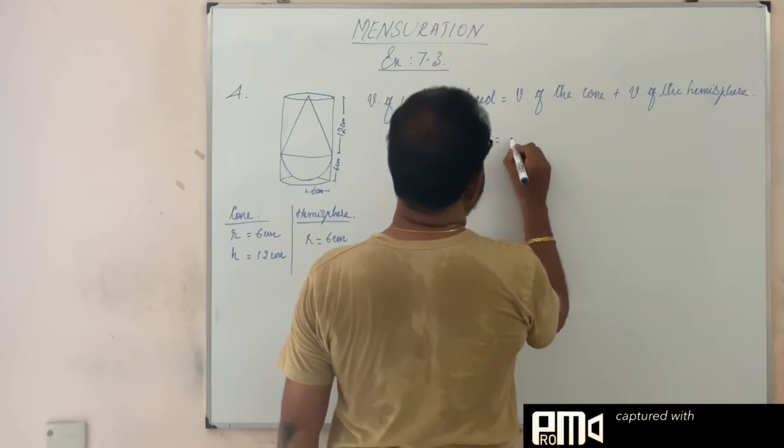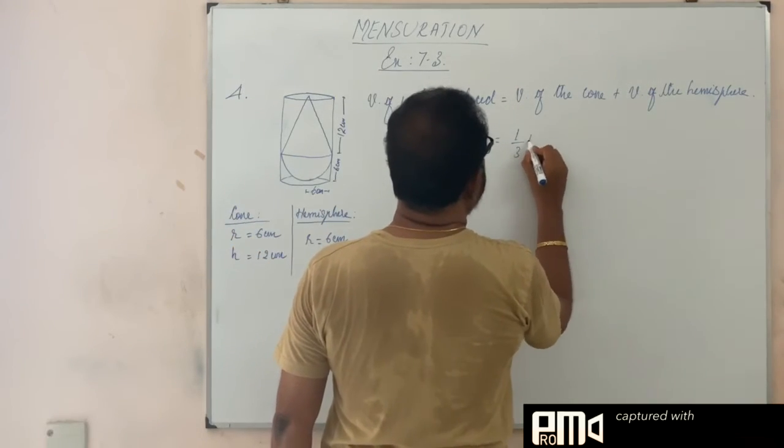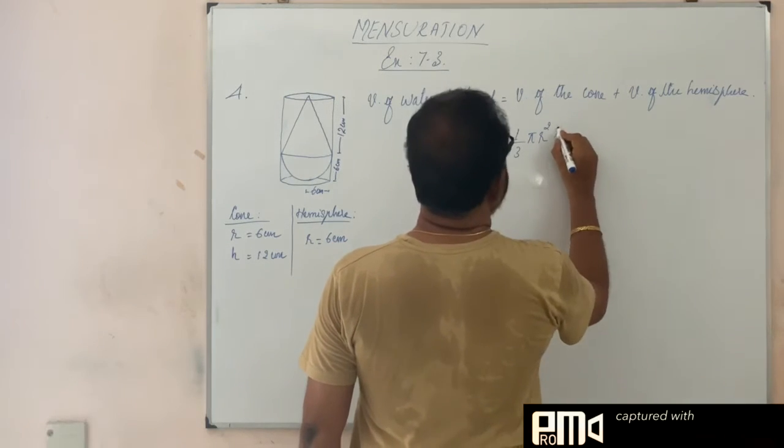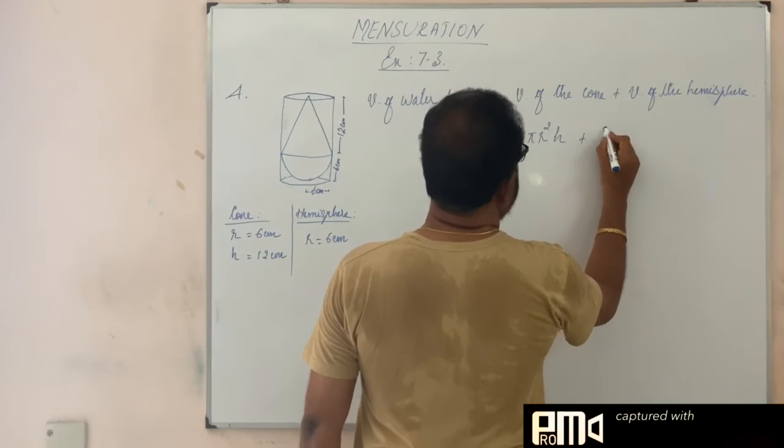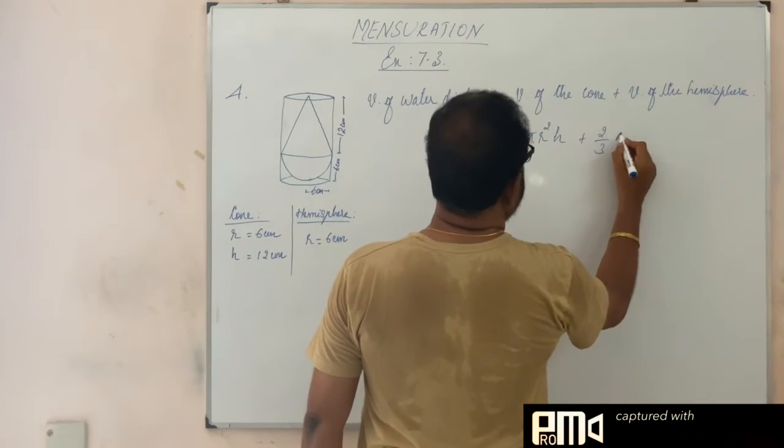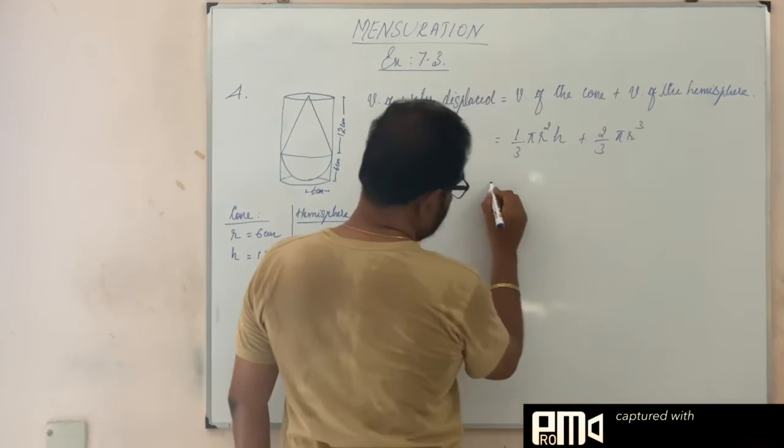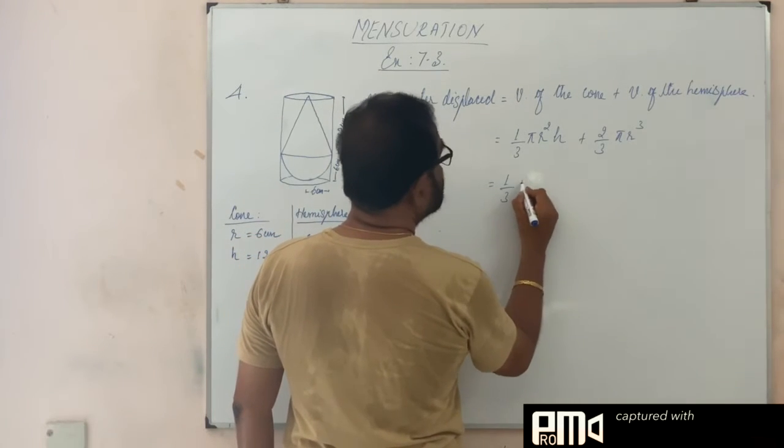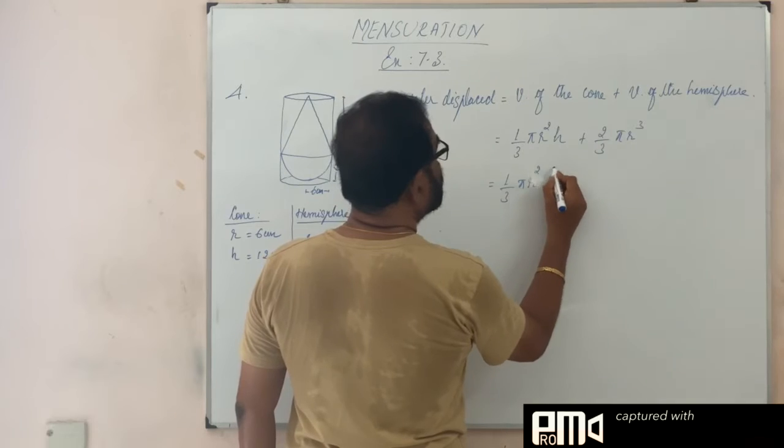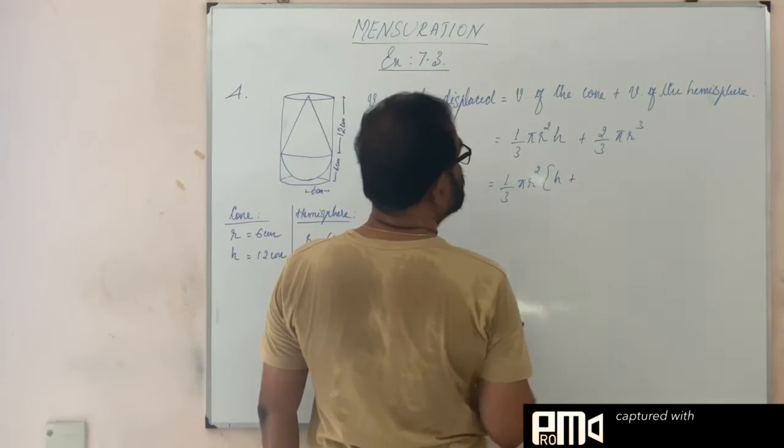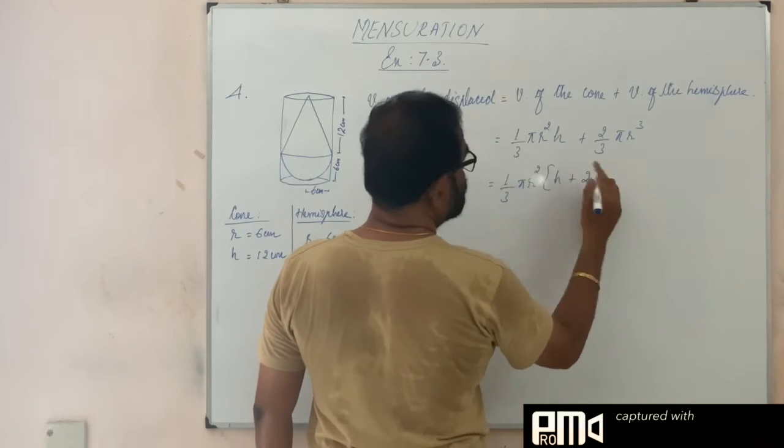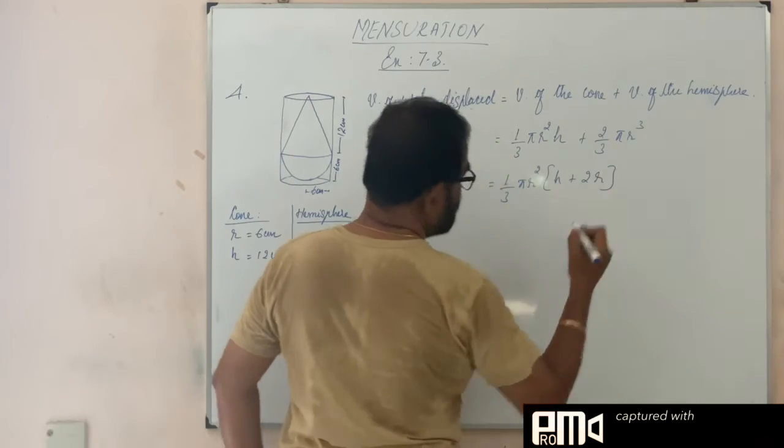So volume of the cone, volume of the cone is you know it is 1/3 π r² h plus 2/3 π r³. That is equal. What is common here? 1/3 π r² is common. 1/3 π r². Then h plus, 1/3 came out so we have a 2 here. π r² is already outside. So 2r. h plus 2r.